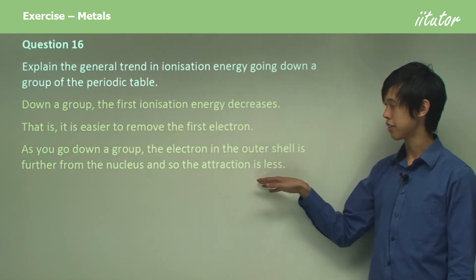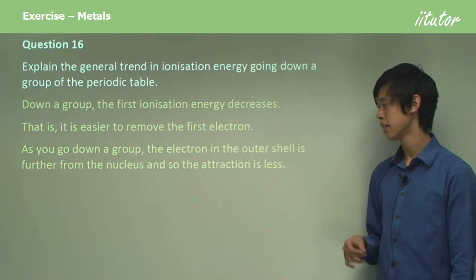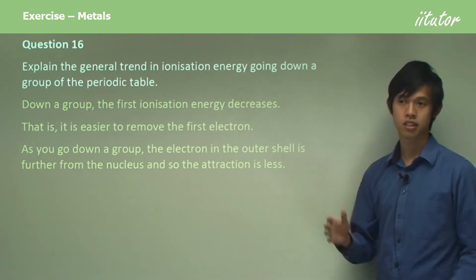As you go down a group, the electron in the outer shell is further from the nucleus, and so the attraction is less because it's further away.